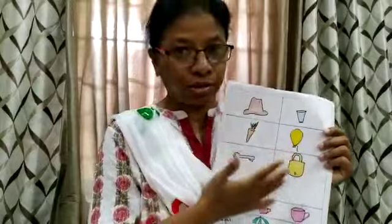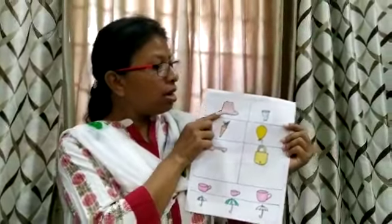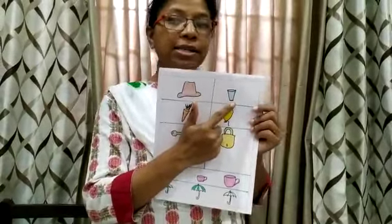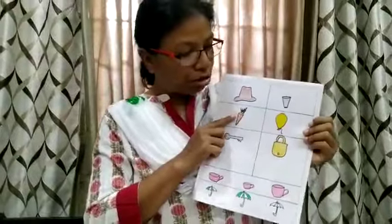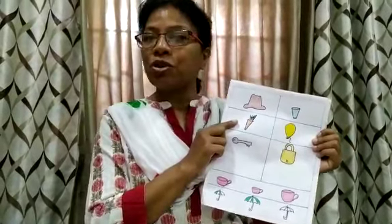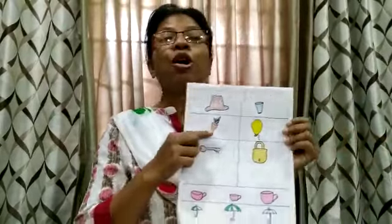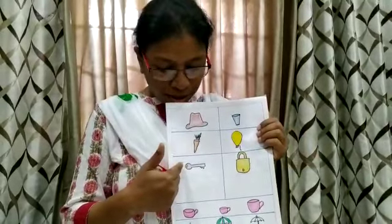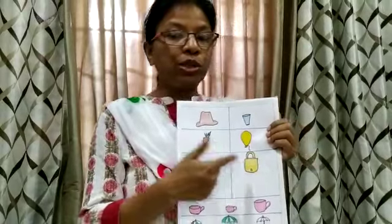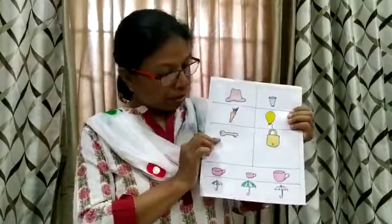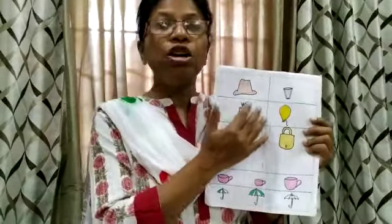Now we go to the next one, where we are going to compare different pictures — not the same picture. Can you see a hat and a glass? The glass is the small picture and the hat is the big picture. Now can you see a yellow balloon and a carrot? Carrot is the small picture and balloon is the big picture. Now the third picture — a key and a clock. The clock is the big picture and the key is the small picture.